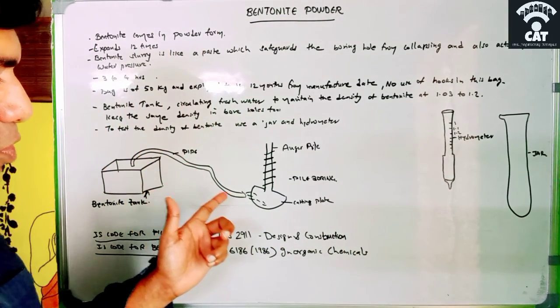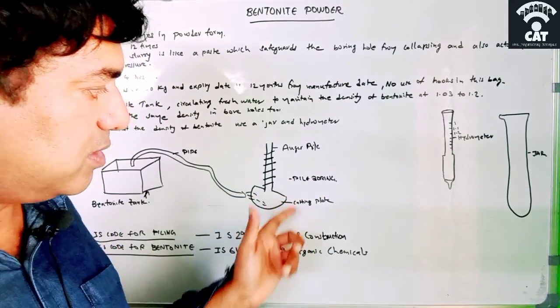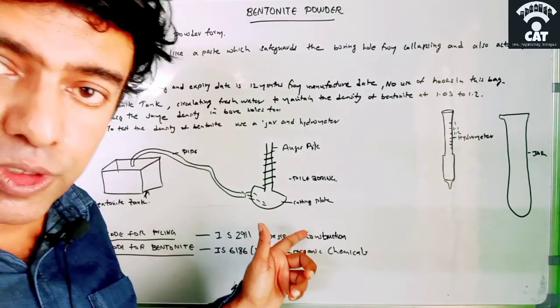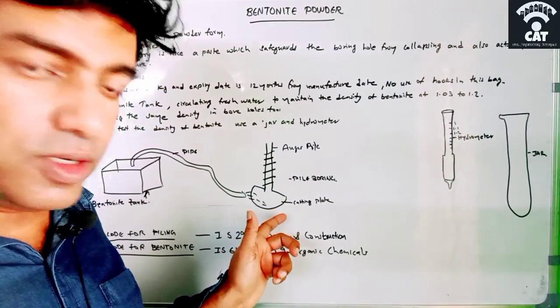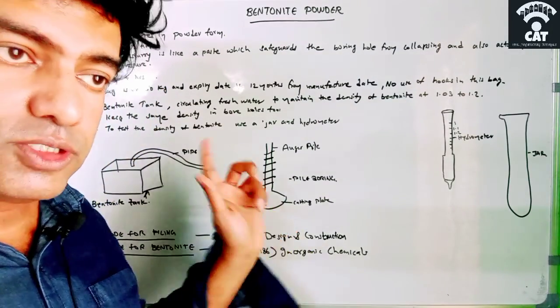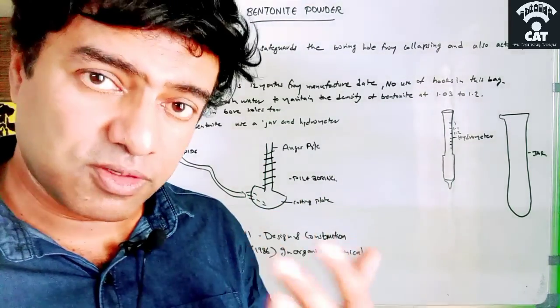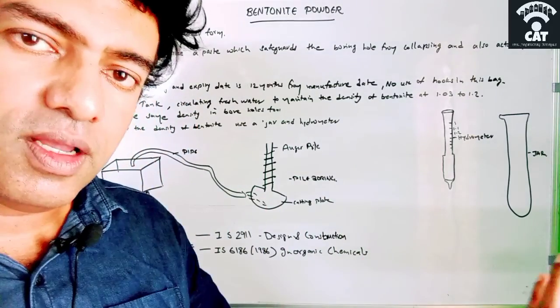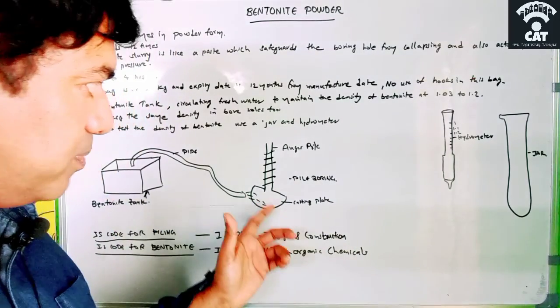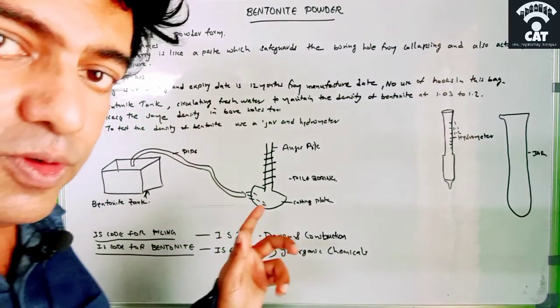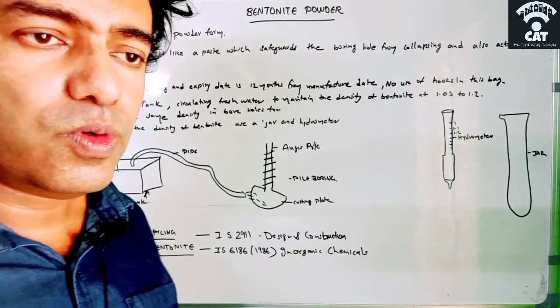From the tank, like you see, there is always a pipe which goes to the area where the boring is happening. This is an auger pipe and the boring is happening at the cutting plate. Onto the cutting plate the bentonite slurry will come into this area. As long as the boring happens, this bentonite slurry is also going along with that and it will make a paste along the borehole. It stabilizes the soil and prevents the water pressure from outside. From this diagram we know how we are using bentonite in the piling process.